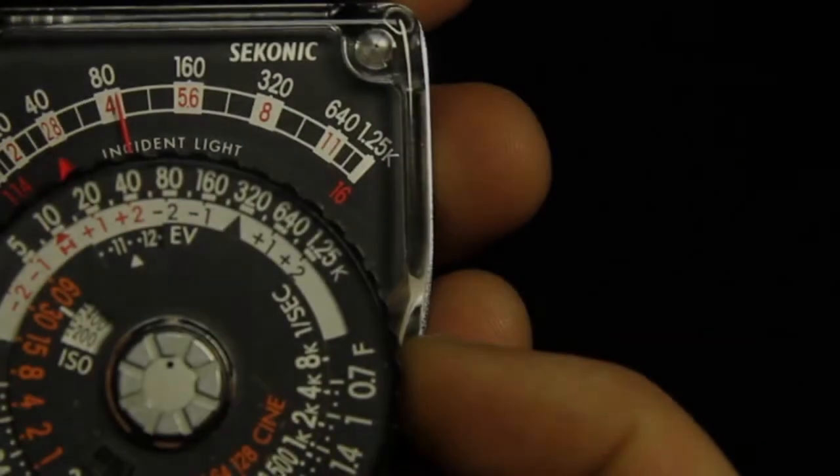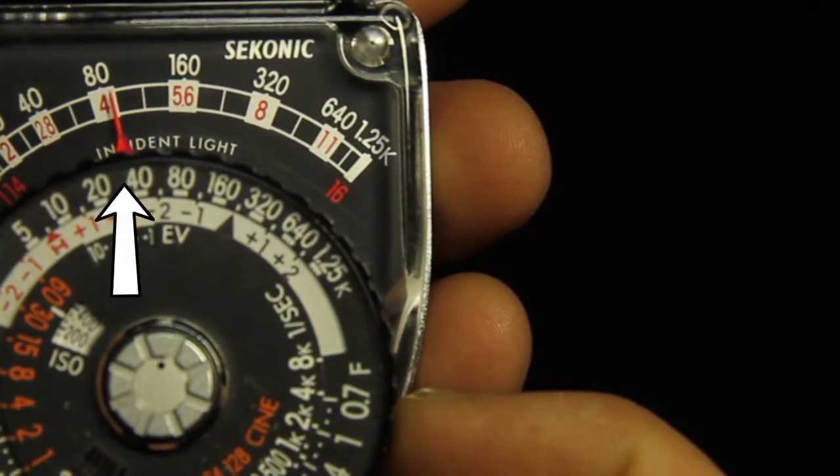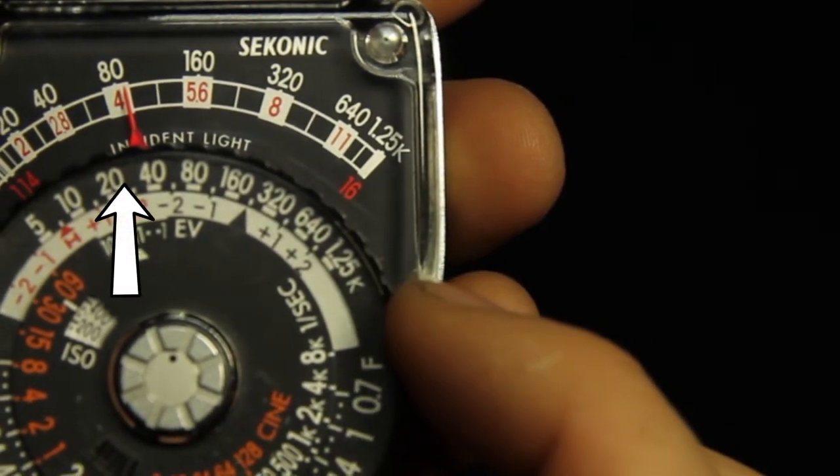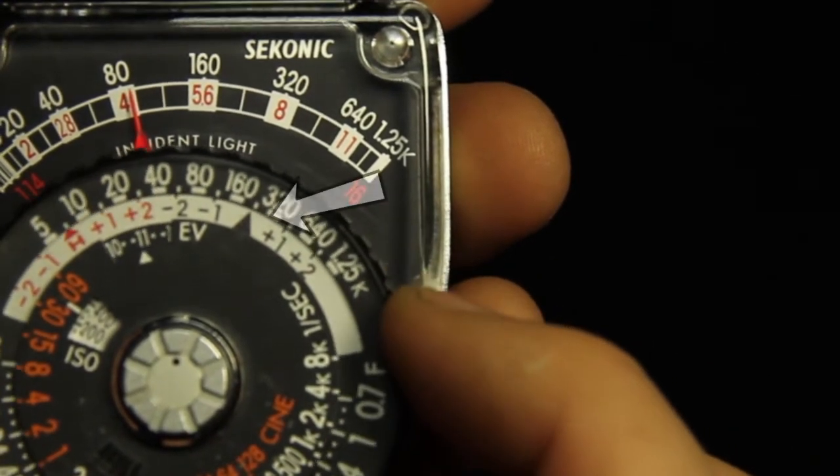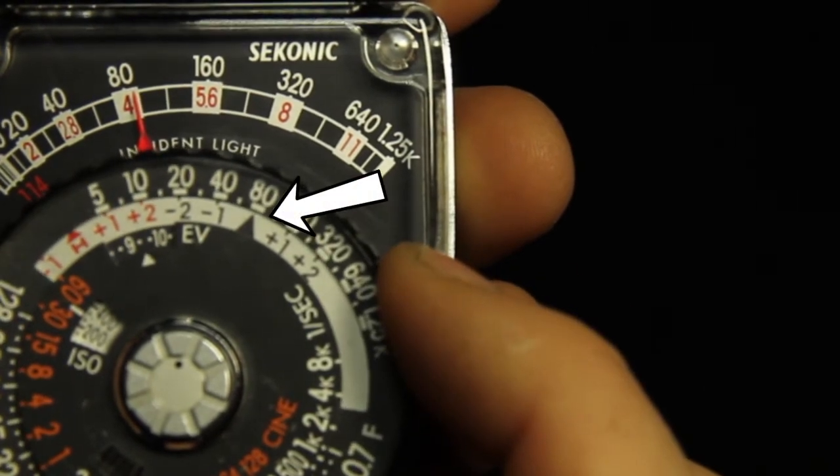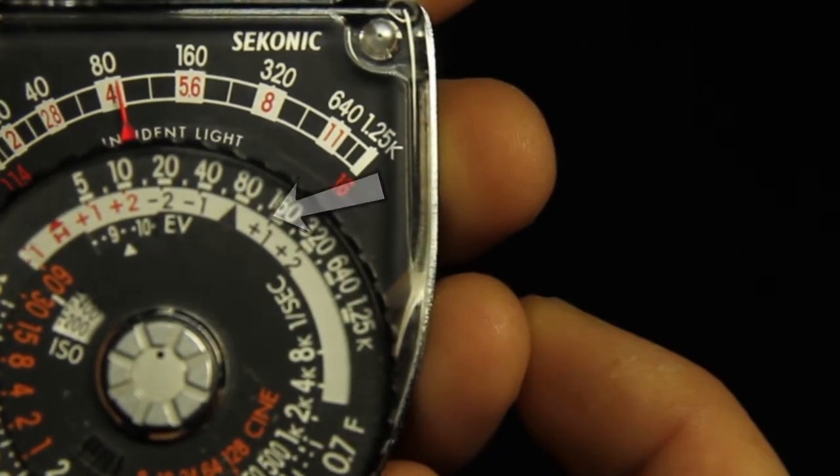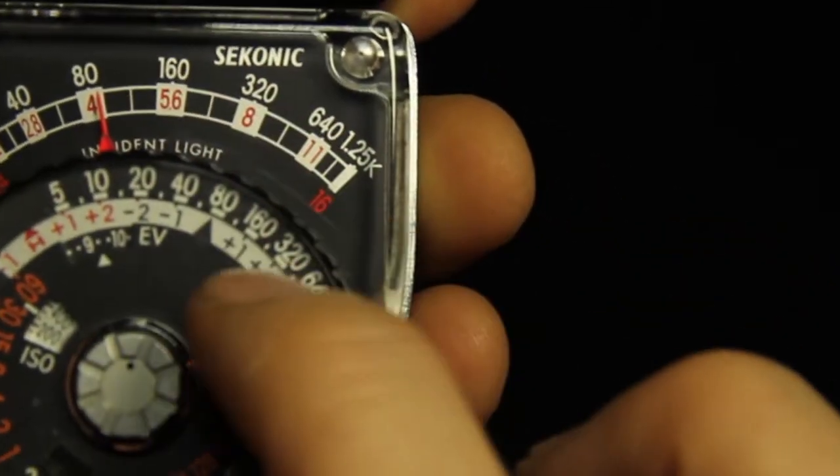Now grasp the outside of the dial so the red marker lines up with the meter needle. Next turn the black dial ring so that the black pointer on the computer dial lines up with the same foot candle value that is indicated by the needle.